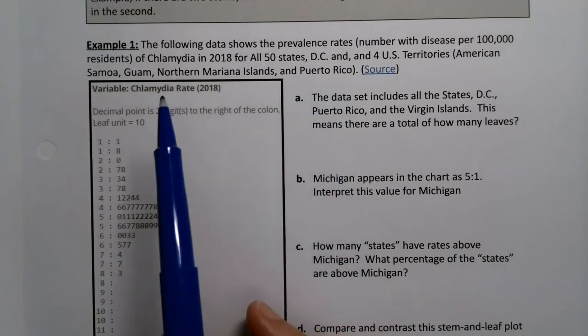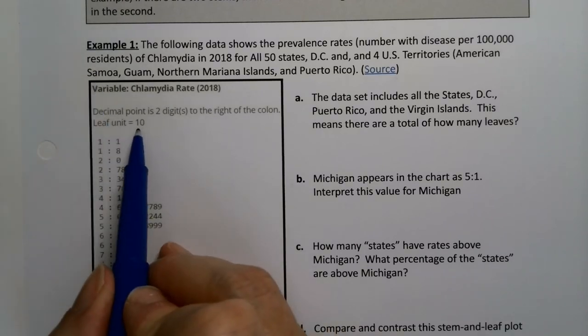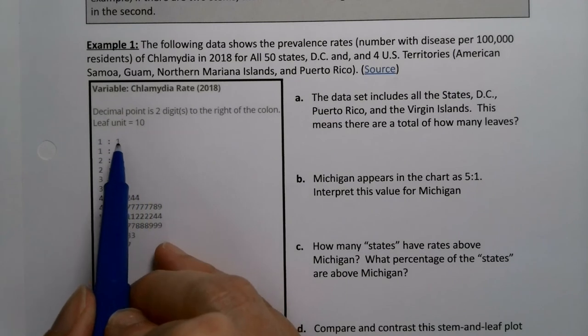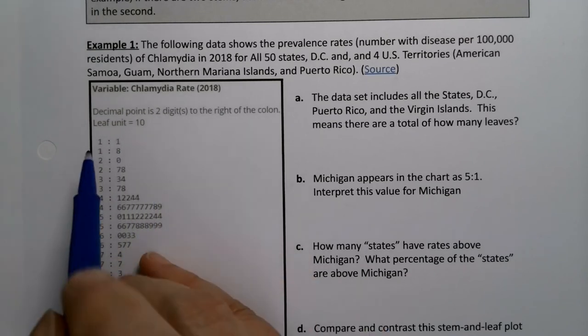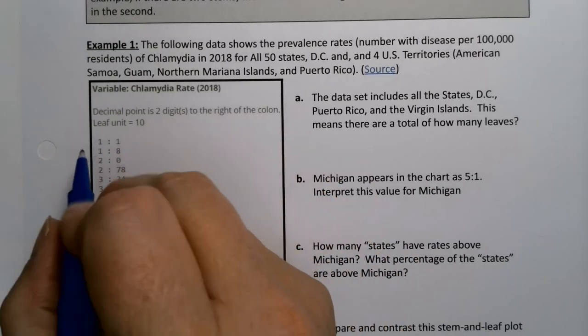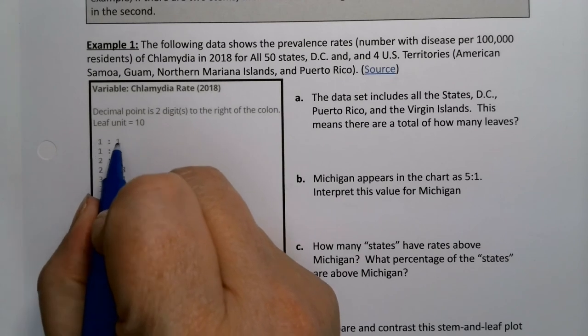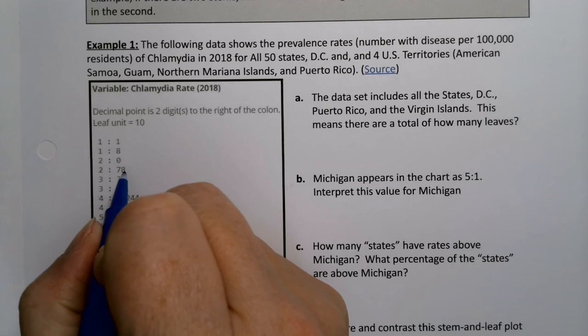There are the stems, there are the leaves. It says the leaf unit is 10, and the decimal point is two digits to the right of the colon. So that particular one is 110, 180, 200, 200, then there's the 70, then 200 and there's an 80.